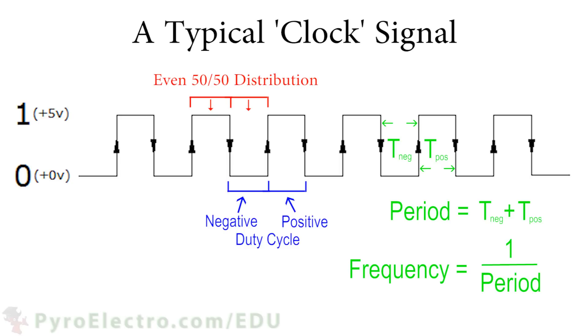and logic 1 time, positive duty cycle, added together give you the period of the clock signal, and 1 over the period gives you the frequency of the signal. Frequency meaning how many times that period occurs in one second.